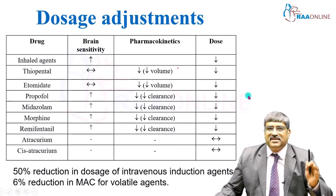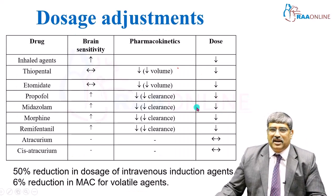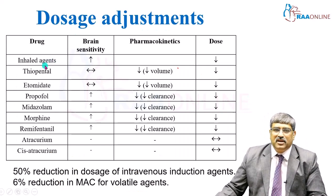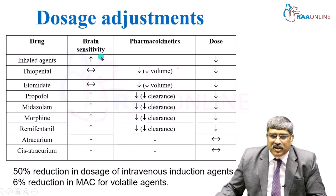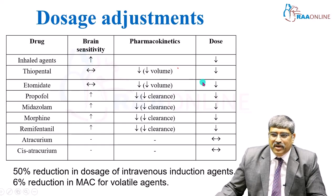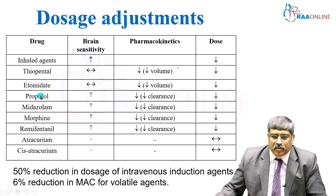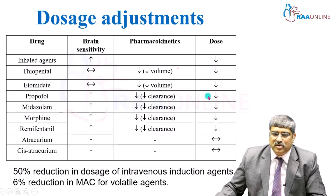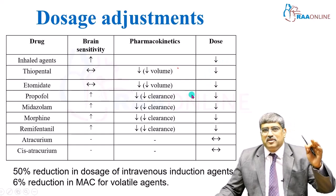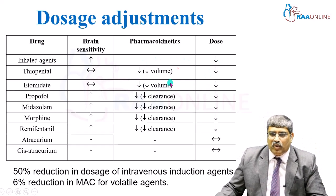To summarize the various individual anesthetic agents — with inhalational agents, your brain sensitivity is going to be increased. So reduce the dose. With induction agents like thiopentone, etomidate, propofol, and midazolam, you have to reduce the dose. This is because of either decreased volume of distribution or decreased clearance.